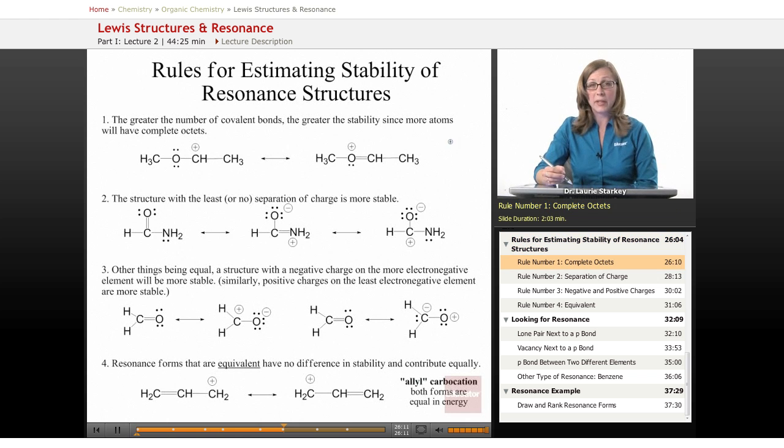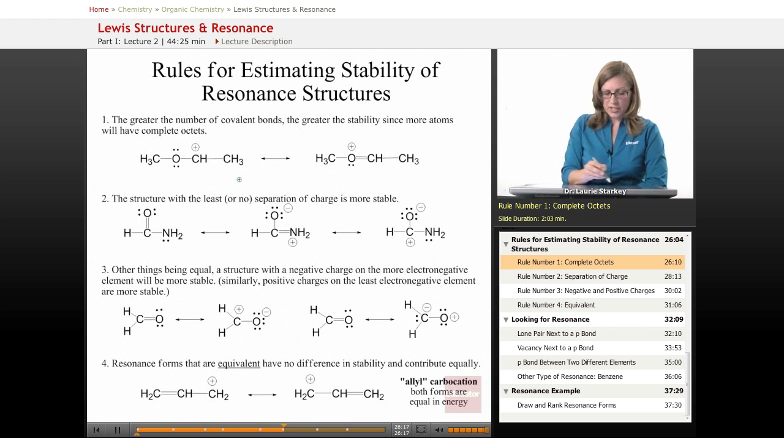Actually, first let's discuss the stability of various resonance forms and how we would estimate which form is more stable. Here's an example of a molecule that has two different resonance forms. Which of these is more stable and which contributes more to the overall hybrid?